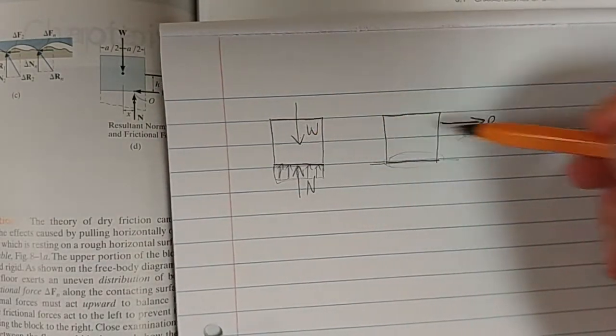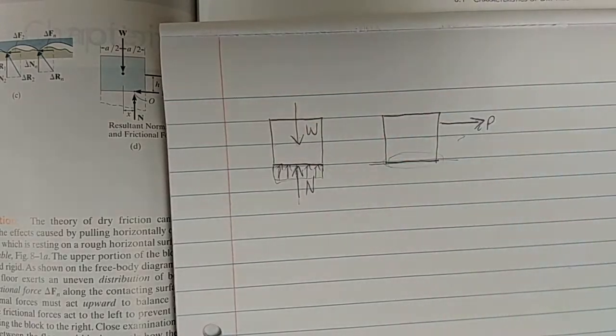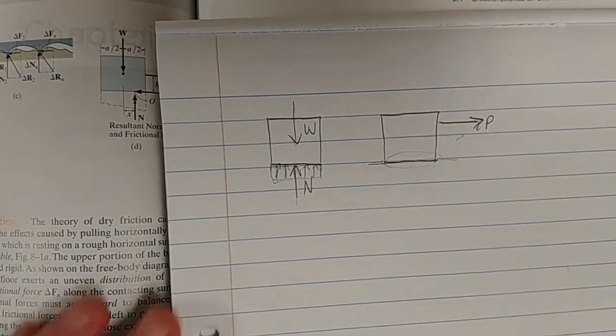So, while there's no force P, this is our free body diagram. We're going to have a normal force and a weight. When we begin to apply a force P, what actually happens is...